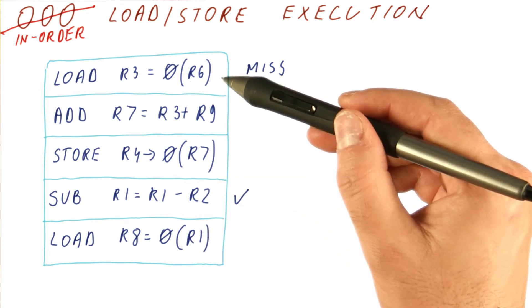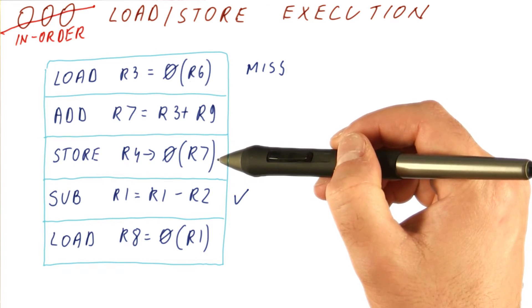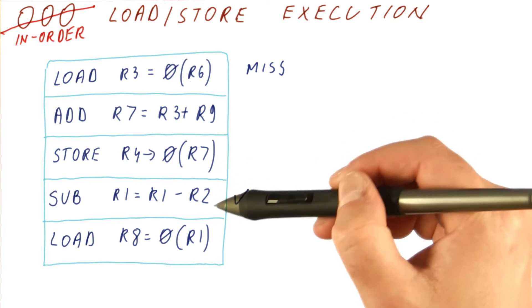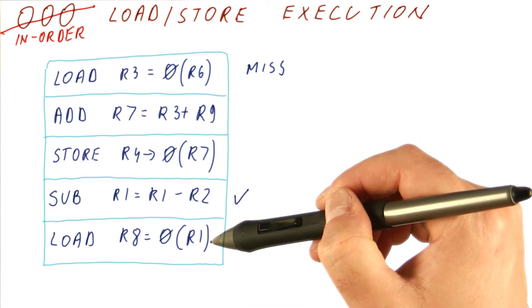Because this load is not done, we are not going to consider the store for execution that is for producing the value for this address. And as a result, we are also not going to do this load.